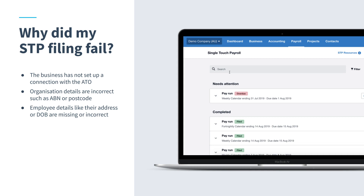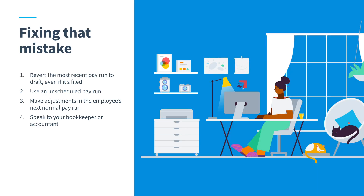If you do need to fix a mistake with the pay run, there are three ways you can do this in Xero. The first is to revert the most recent posted pay run per pay calendar to draft, edit what you need to, and then file it again to the ATO. The second is to use an unscheduled pay run, then file this to the ATO like you would a normal pay run. And lastly, you can make an adjustment in the employee's next normal pay run. It's up to your business which option is best suited for the type of adjustment you need to process. And if you're not sure, reach out to your bookkeeper or accountant who can help you decide.